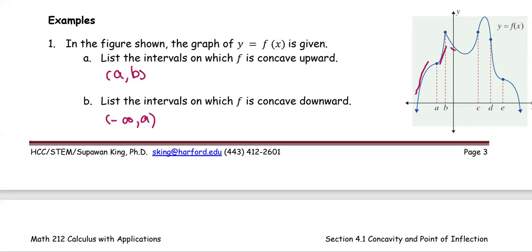Next one from b to c, draw the tangent line along the curve for the entire interval. The graph is above. The tangent line, so it's going to be concave upward.